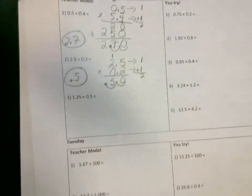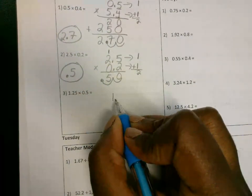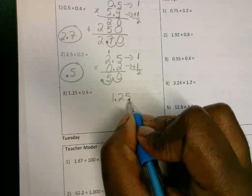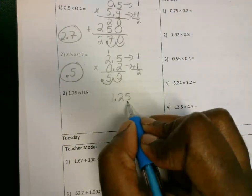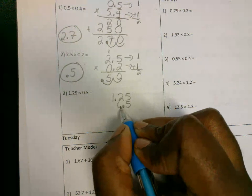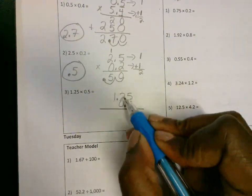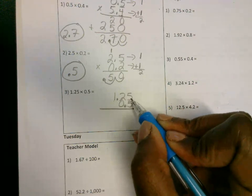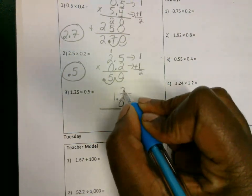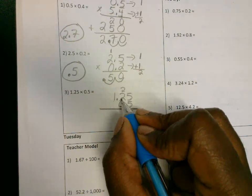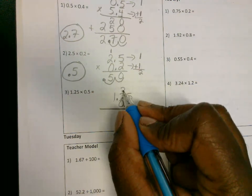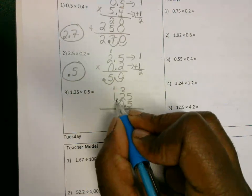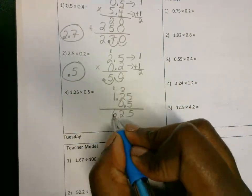All right, number three. Again, we're going to line up by the number. We have 1.25 or 1 and 25 hundredths. We're going to put our five here, decimal here, zero. Do you see how I lined up by the number, not the decimal? All right, so now we have five times five. That's 25. Carry the two. Five times two is 10, plus two is going to be 12.